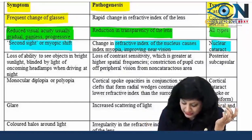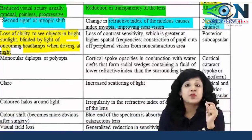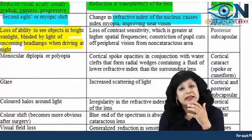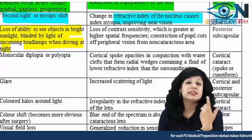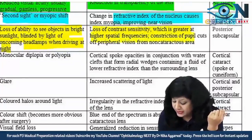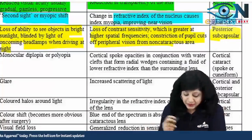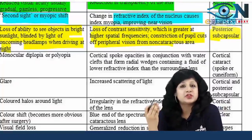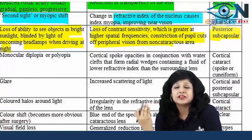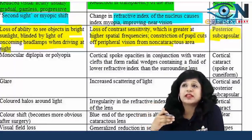Next is loss of ability to see objects in bright sunlight — blinded by light, especially driving at night. This is very important. Patients complain they are not able to drive, especially at night, because there is a loss of contrast sensitivity, especially at the highest spatial frequency. This is very typical of posterior subcapsular cataract. These things will help in solving clinical questions when they give you clues about the kind of cataract.